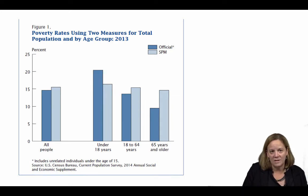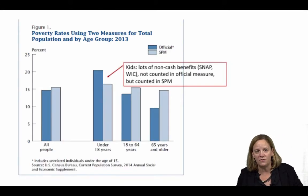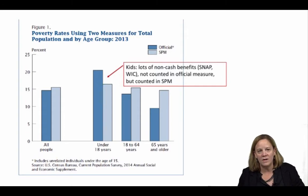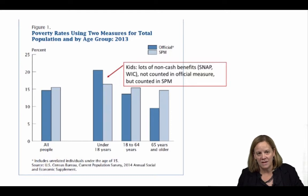What's more interesting, however, is that the SPM produces substantially lower poverty rates for children compared to the Official Measure. One of the most important reasons for this difference is that children in the U.S. disproportionately benefit from many in-kind programs, especially nutrition-related programs. In the U.S., these programs don't count as income in the Official Poverty Measure. Once we include these benefits as income in the new measure, poverty rates among children are significantly lower.